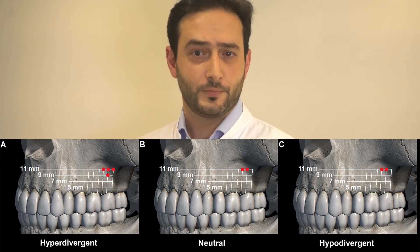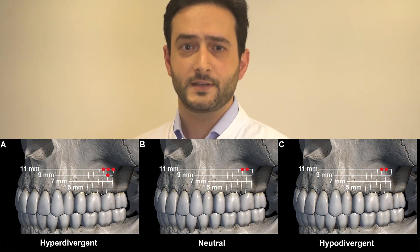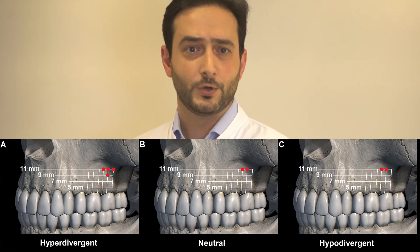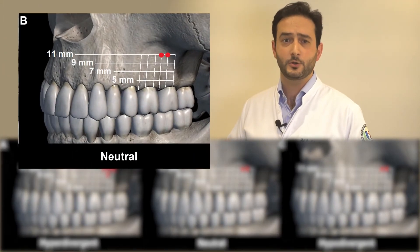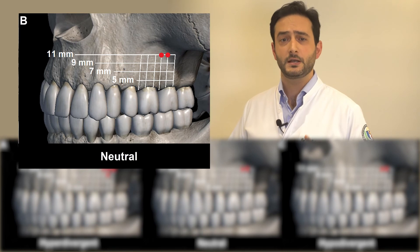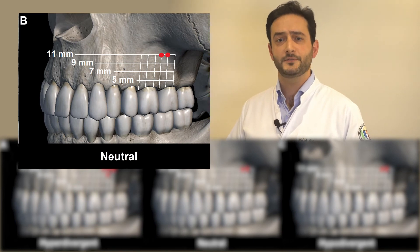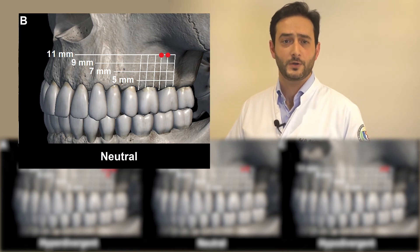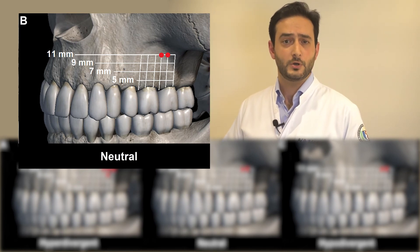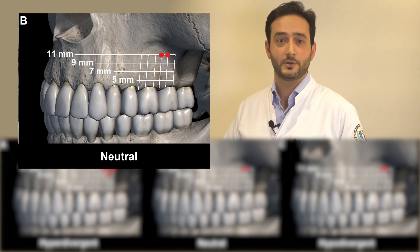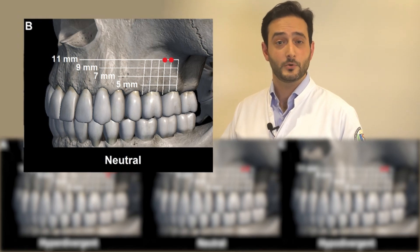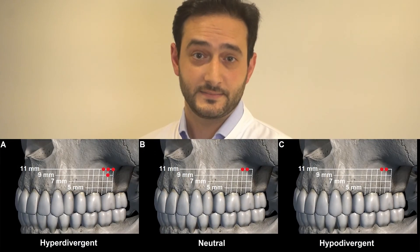In the neutral group, the safe sites found were between the first and second molars at 11 mm from the alveolar crest, and the mesial root of the second molar at 11 mm from the alveolar crest on both sides.